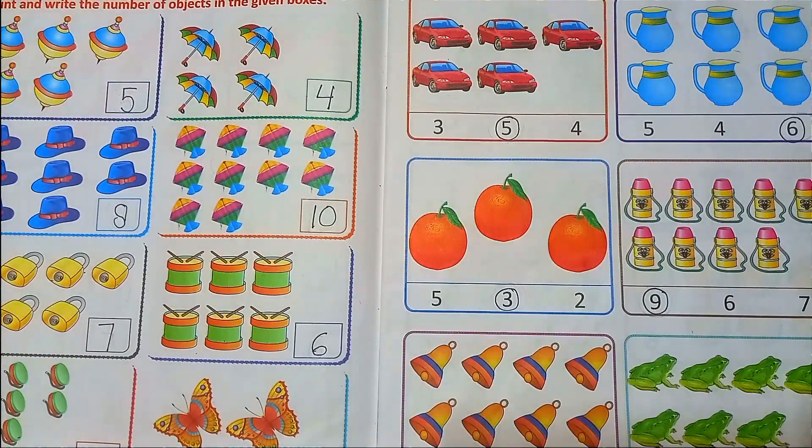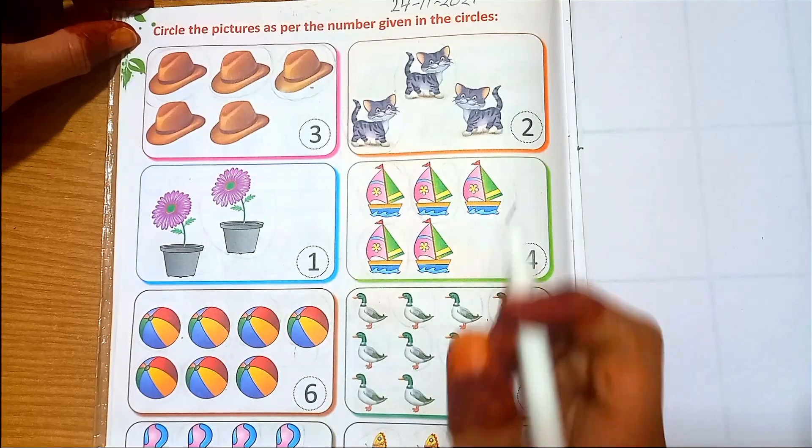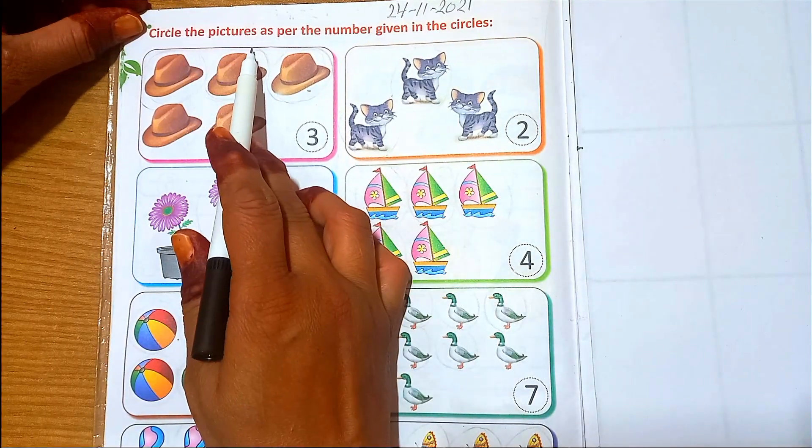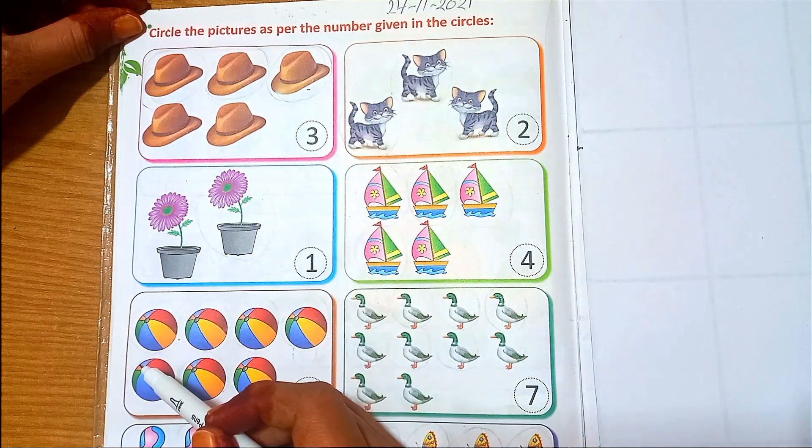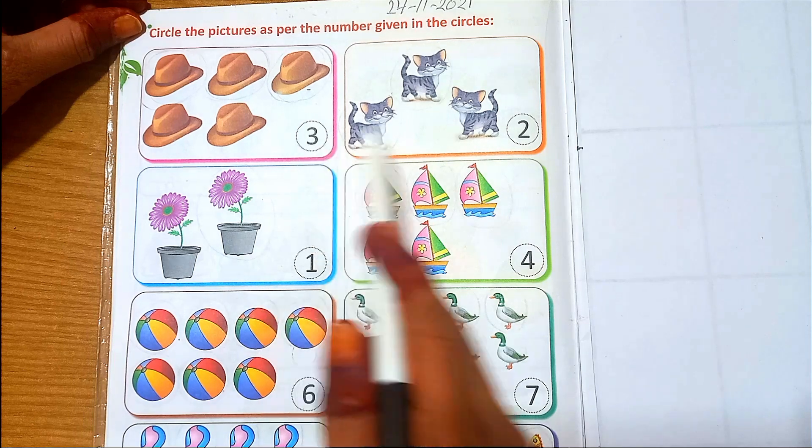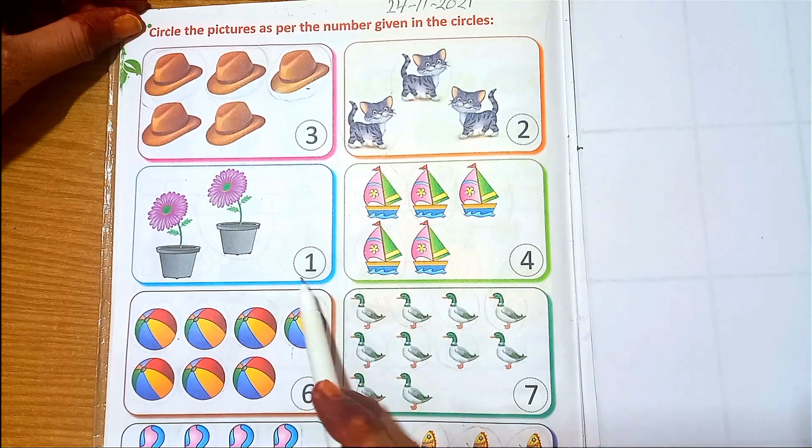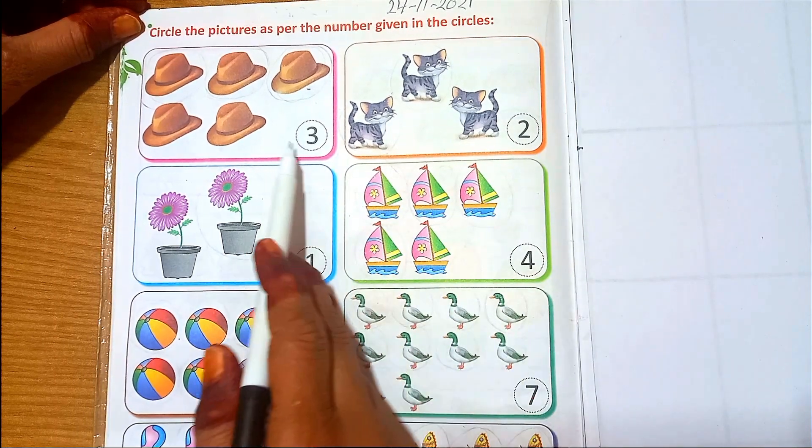Finish. Now we will paste the pictures. Let's see. Circle the pictures as per the number given in the circle. It's a circle, it's a number. We have to see it and we have to count the objects. We have to circle them.